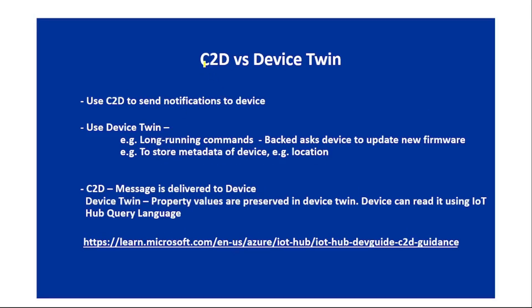Now let's discuss C2D versus device twin. Use C2D to send normal notifications or messages to the device. Use device twin for long-running commands — for example, when the backend asks the device to update its firmware. This is a long-running process; the device keeps updating IoT Hub about the status: initiated, then in progress, then completed. We can also use device twin to store device metadata such as location.